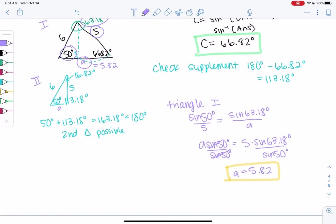So A is 5.82 on triangle 1. Cool. So we solve triangle 1. We know all three sides and all three angles. Triangle 2, we get a slightly different A. It looks like it's smaller because that's what made the different angle.